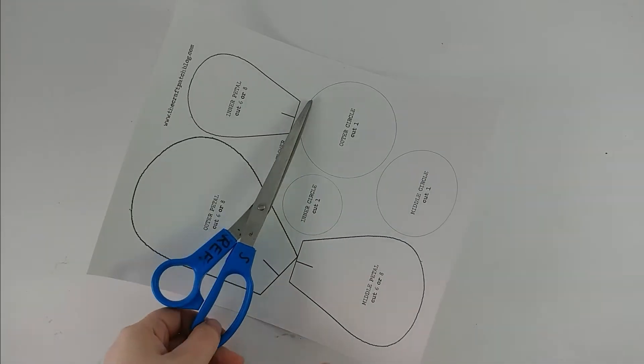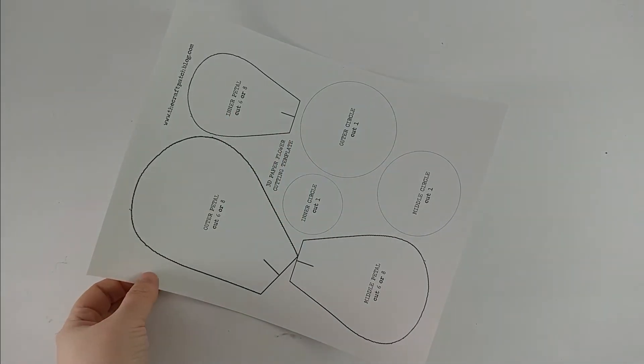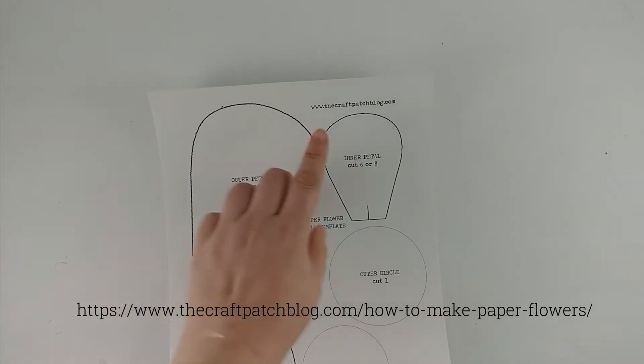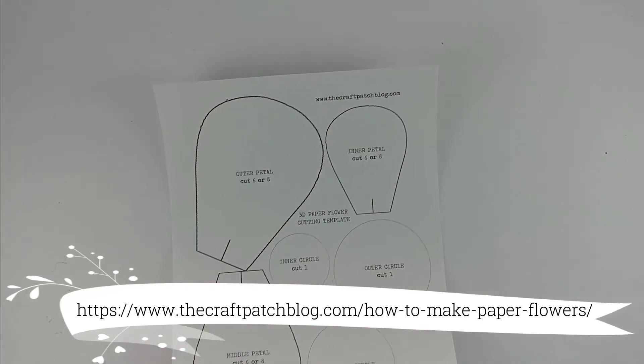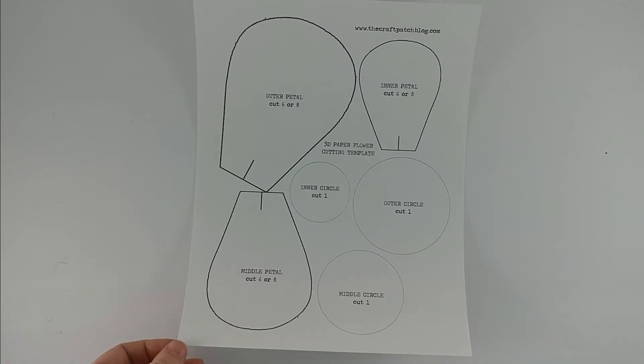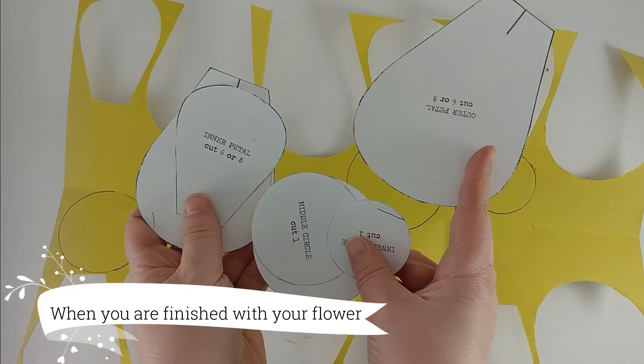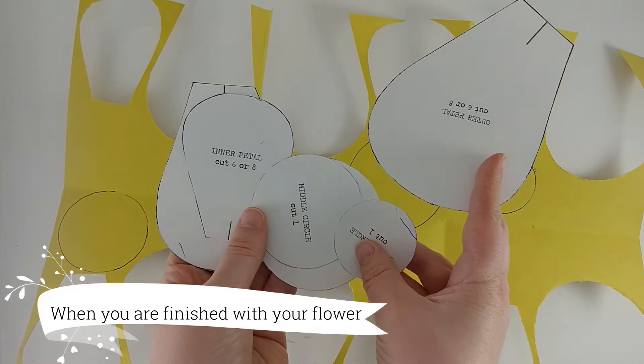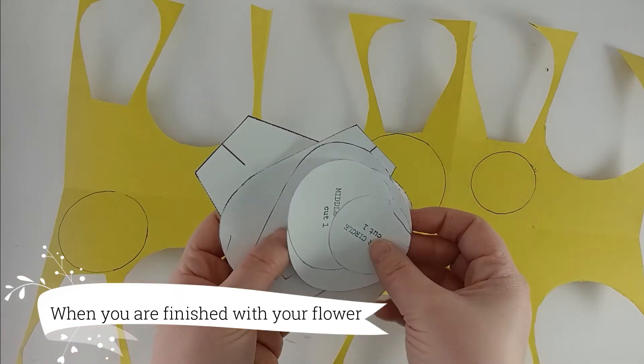The first thing to do is take your scissors and cut out your template. This template is thanks to the craftpatchblog.com. You can find written directions as well as the downloadable template. I still have all of my original cardstock templates. I can throw these in an envelope and save them for the next batch of flowers.